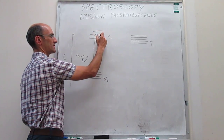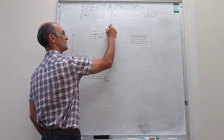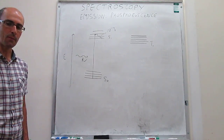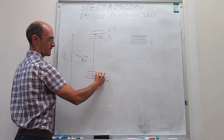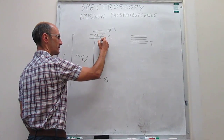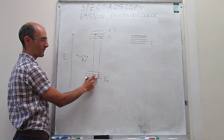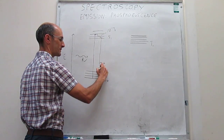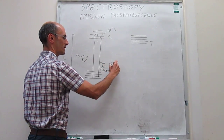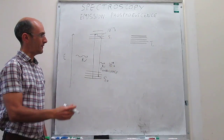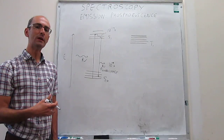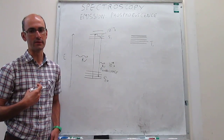After absorption, the molecule relaxes very fast through vibrational relaxation, typically on a time scale of 10 to the minus 12 seconds. If the system then returns to the ground state emitting a photon, that's what we call fluorescence — we've already studied this. The fluorescence time scale is about 10 to the minus 9 seconds. The system may also relax from the excited state through collisions with the medium without emitting photons, or it may react, since excited states tend to be more reactive than ground states.